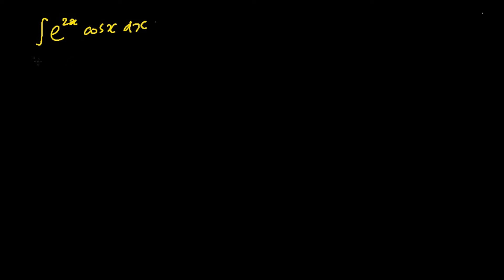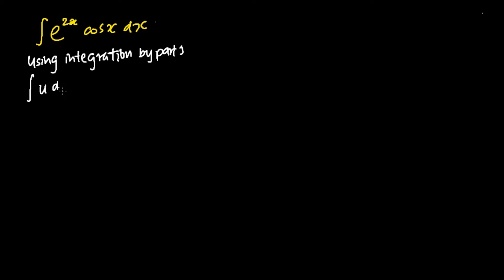We are going to use a very popular integration technique called integration by parts to solve this problem. The integration by parts tells us that if I were to integrate u dv, this equals to uv minus the integration of v du, in which I would define one term as u and the other as dv. To get my v, I will integrate dv. To get my du, I would differentiate u.